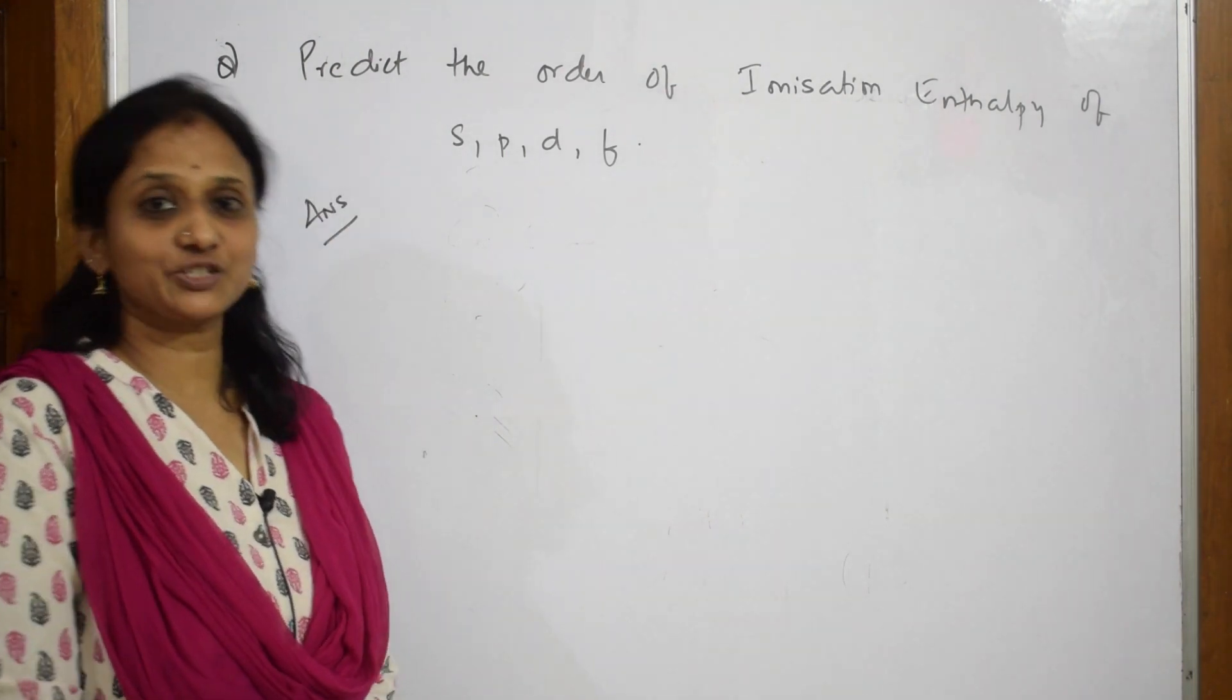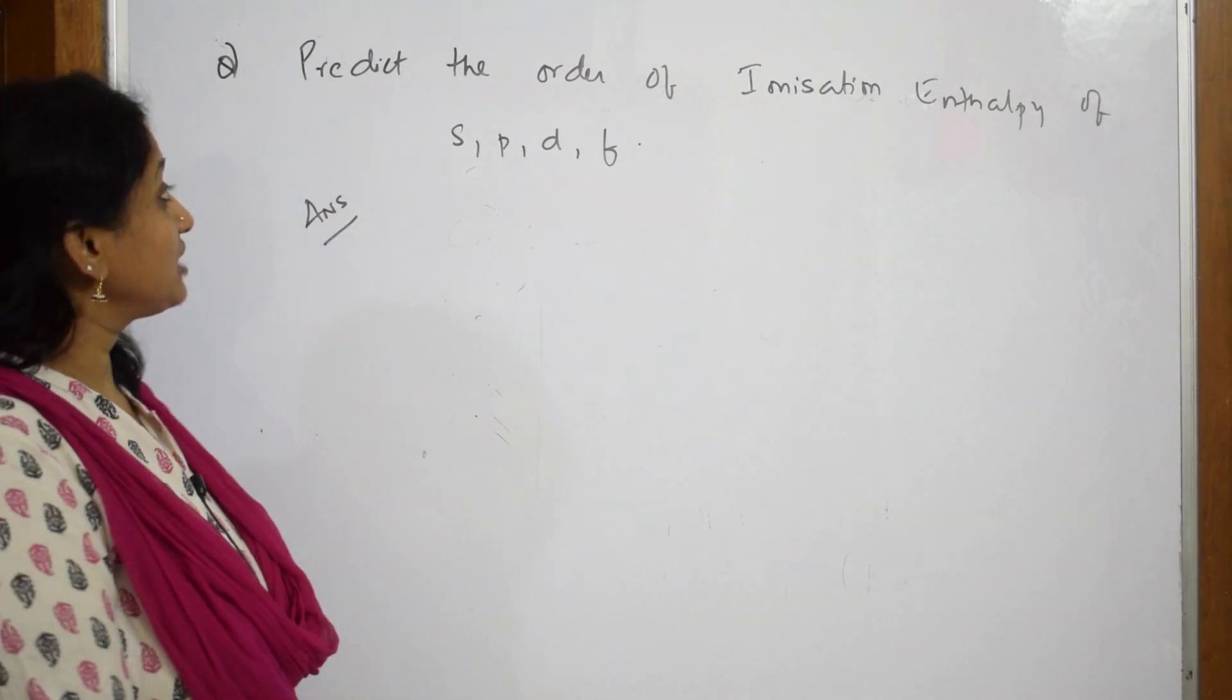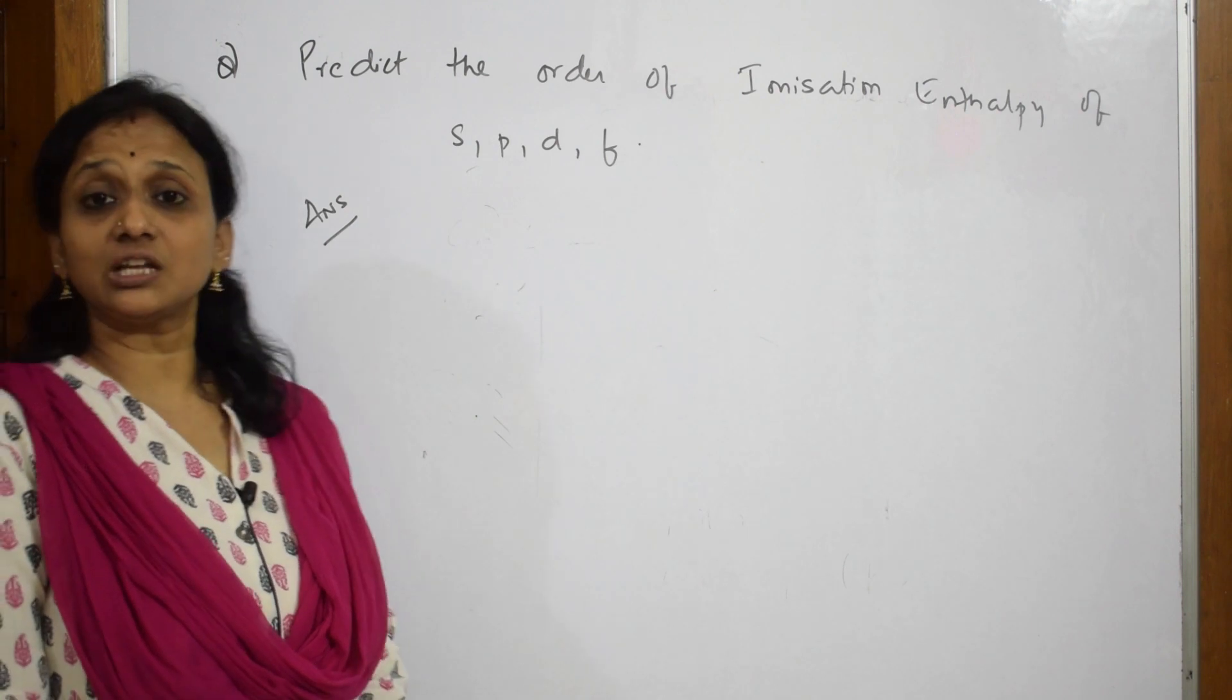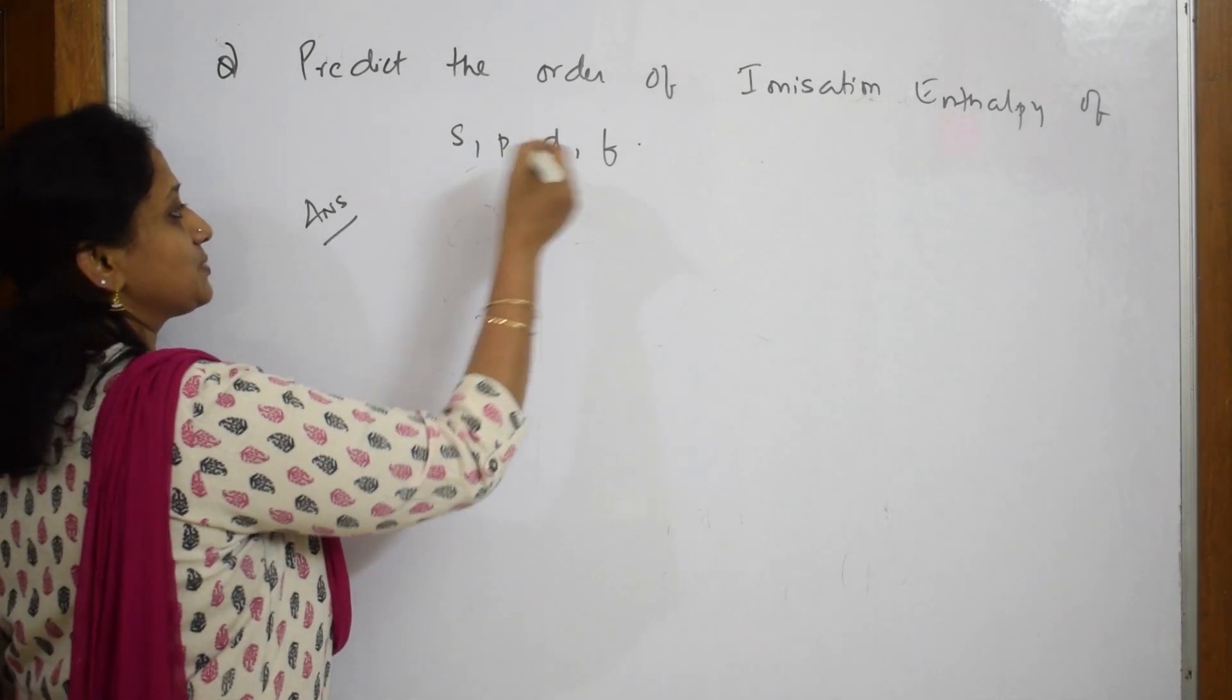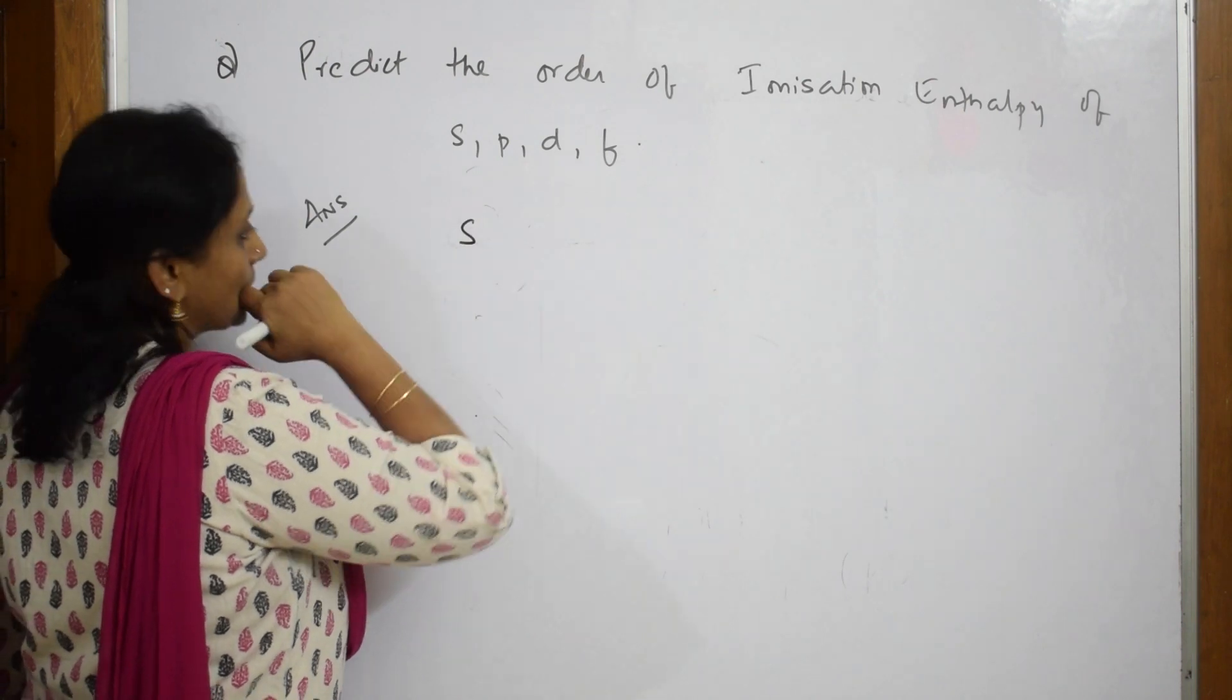Right, now let's see one more question based on ionization enthalpy. Predict the order of ionization enthalpy of s, p, d, f orbitals. Simple. So whenever I have to write s, p, d, f order, just compare them like this, right?